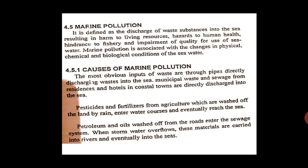So industries, municipalities, residencies, and hotels all discharge into the sea. Pesticides and fertilizers from agriculture are washed off the land by rain, enter water courses, and eventually reach the sea. Whatever fertilizers and pesticides people use, due to monsoon rains, they enter water courses, go to rivers, and ultimately end up in the sea.